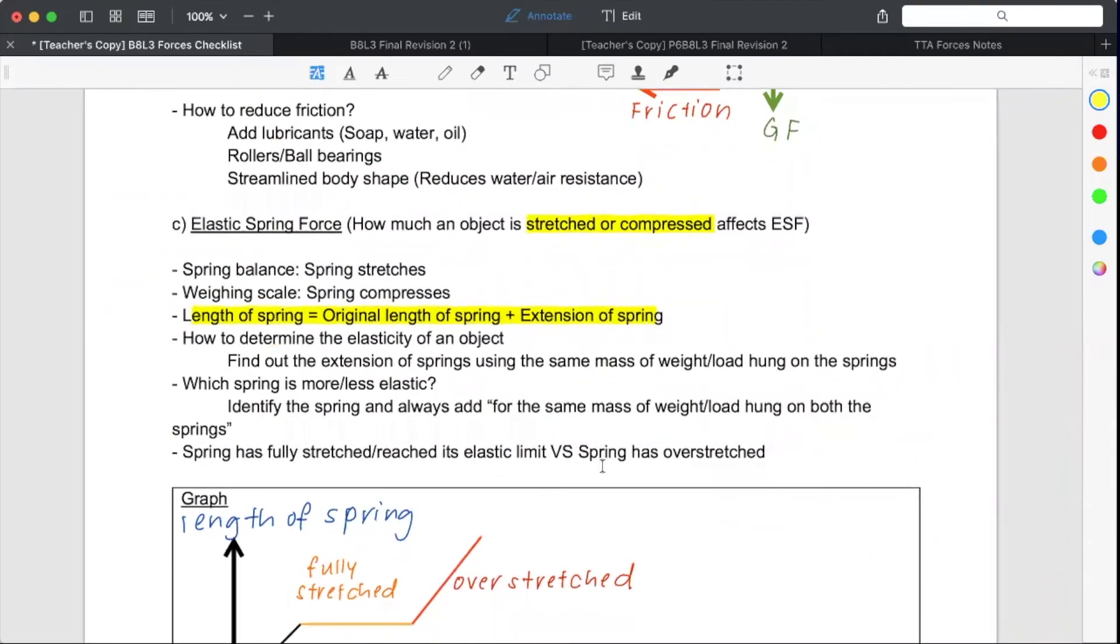So how do we determine how elastic an object is? We find out the extension. We find out how much the spring extends by.